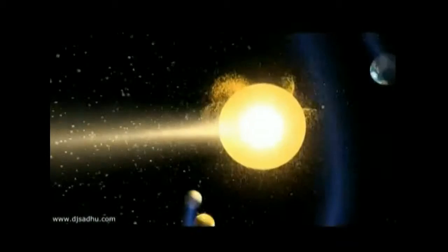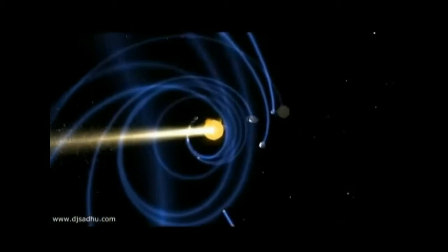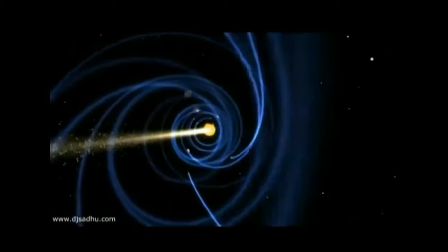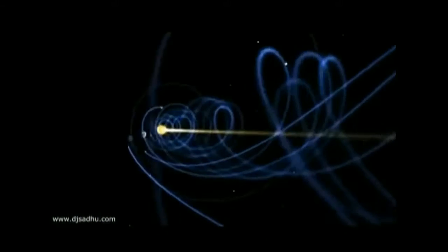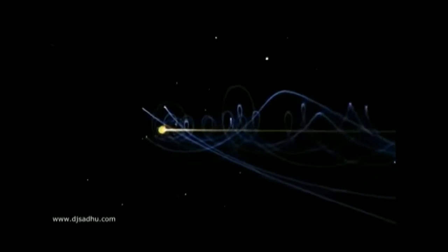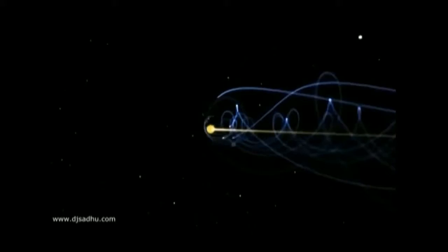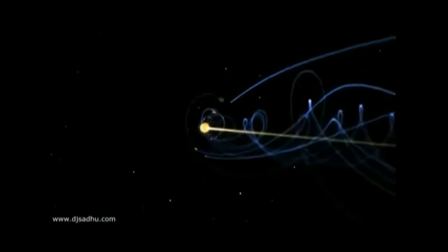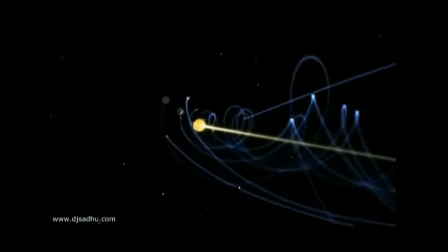Take a look at the representation of how we are supposedly moving through space. Personally, I think it's complete BS. We are told that our planets are flying along spiraling through space at 450,000 miles per hour, cutting a kind of helix path through space.